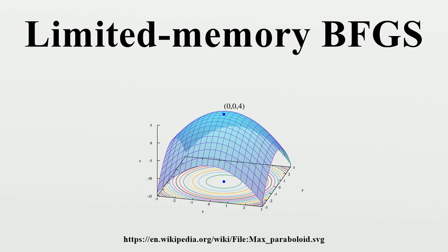Like the original BFGS, L-BFGS uses an estimation of the inverse Hessian matrix to steer its search through variable space. Due to its resulting linear memory requirement, the L-BFGS method is particularly well-suited for optimization problems with a large number of variables.